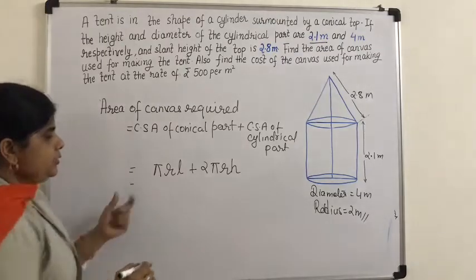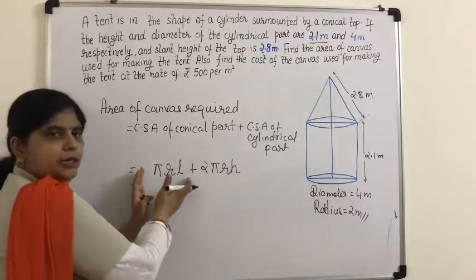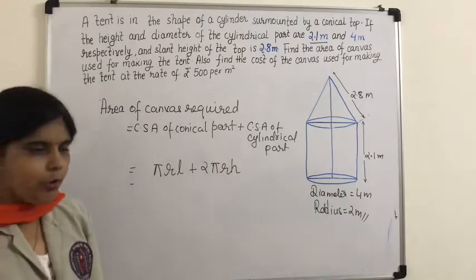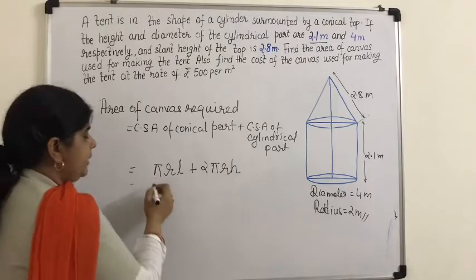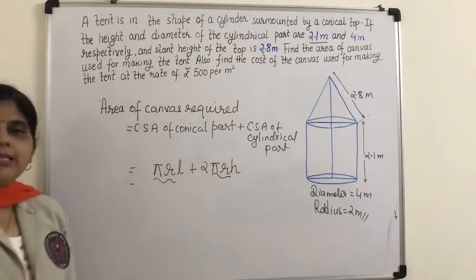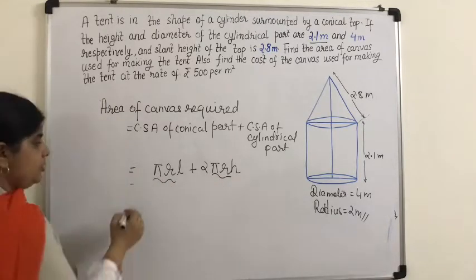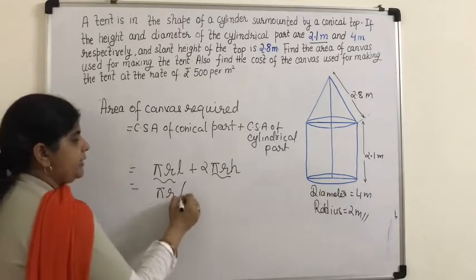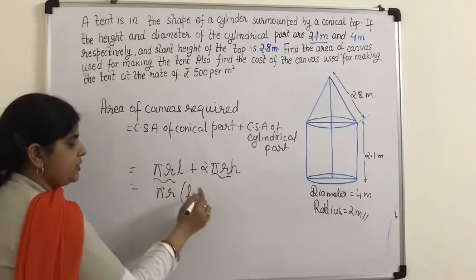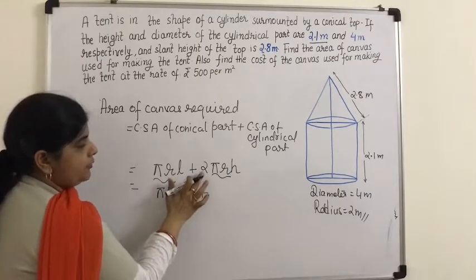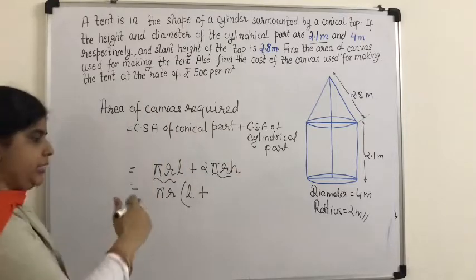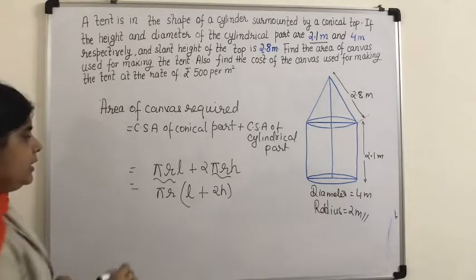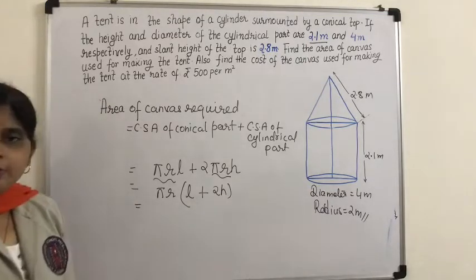There are two methods — find each area separately and add, or take πr as a common factor. Taking πr common, the expression becomes πr(l + 2h), where l comes from the cone's CSA and 2h comes from the cylinder's CSA.